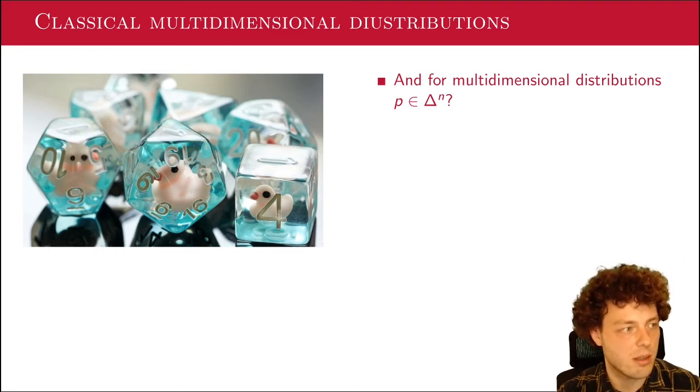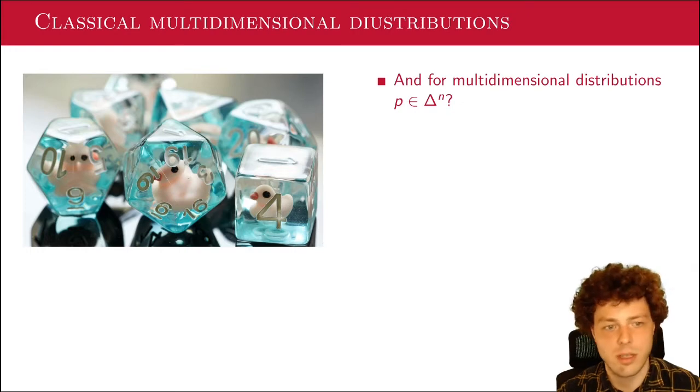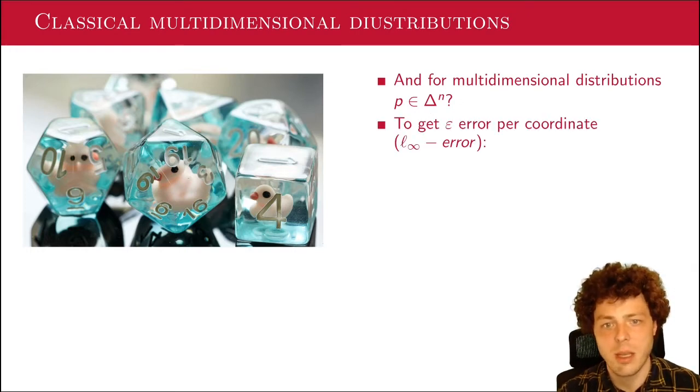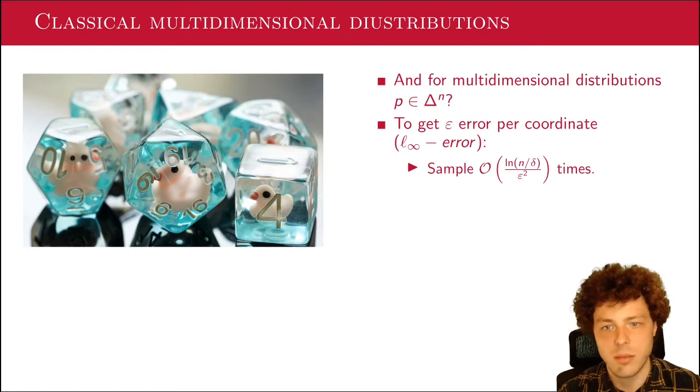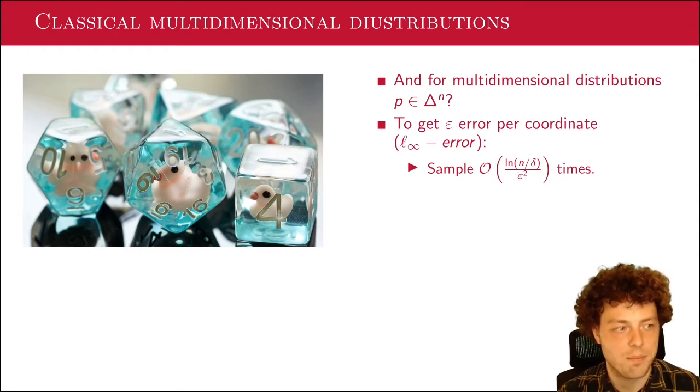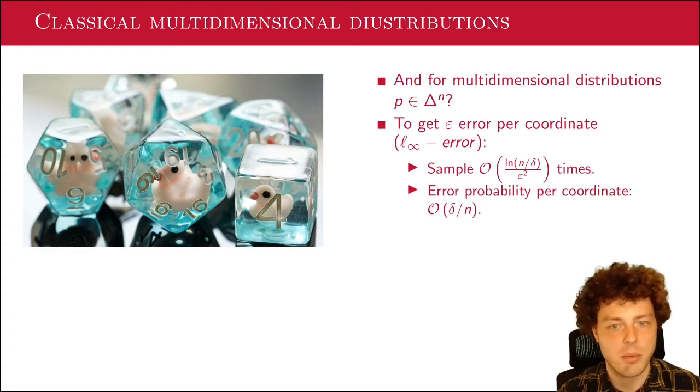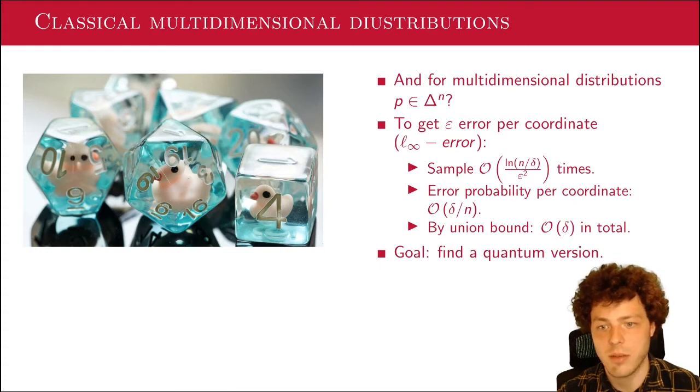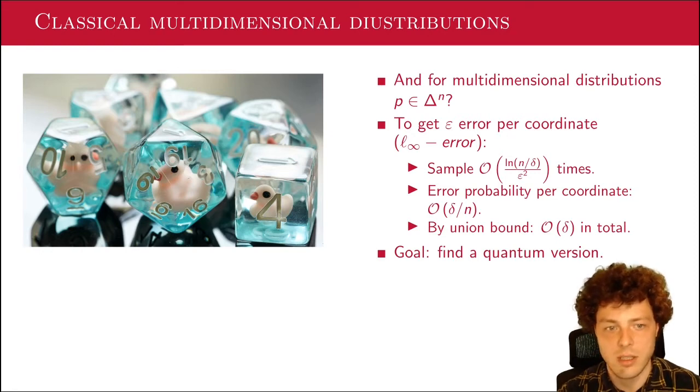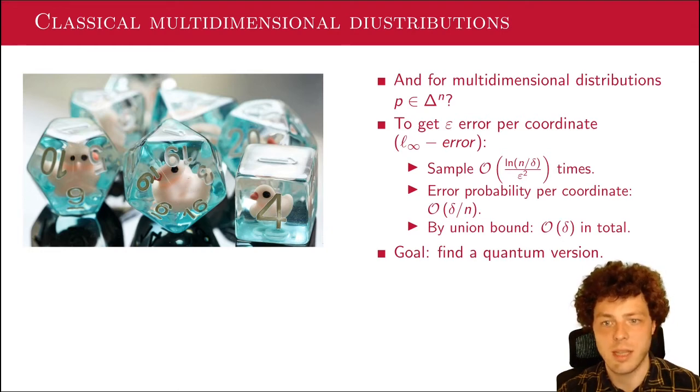How would you estimate that efficiently if it's not just 0 or 1, like a two-outcome probability distribution? So we have multidimensional distributions now, because we can see the outcomes of these dice, the probability distribution, as a 20-dimensional vector, like a higher dimensional vector in general. And for these higher dimensional vectors, I will write Δ to the power n. So these are just the set of all n-dimensional vectors that sum to 1 and have non-negative entries. And our goal will be to get an epsilon error per coordinate. So we want L-infinity norm error. And to do this classically, we again just sample a lot of times. And in particular, we sample almost the same amount of times as we did before, except there's an extra log n here. So we have log n over delta over epsilon squared. That's the number of samples. And to see why this works is quite simple. By the previous argument, we know that the error probability per coordinate is now delta over n. So by union bound, we can show that we have at most delta error in total.